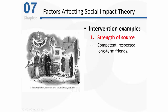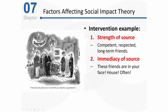The first factor has to do with the strength of the source. Let's assume that these are competent, well-respected, long-term friends that this man has — and keep in mind this is also his wife. Because of their social roles as close friends and as a wife, they should have a lot of social influence on this man. The second key factor was the immediacy of these sources. These friends are in his face right now, and because they're close friends and this is his wife, they are in his face often and in his house often. Their psychological distance to him is very close, and that should maximize the effects of their social pressure.